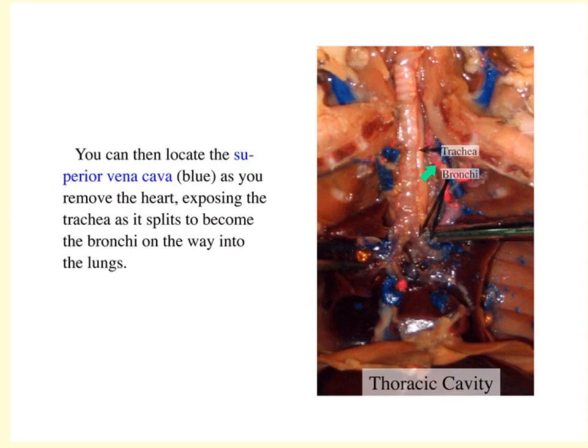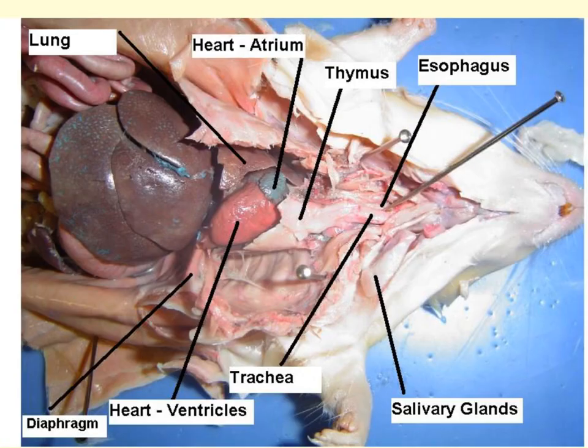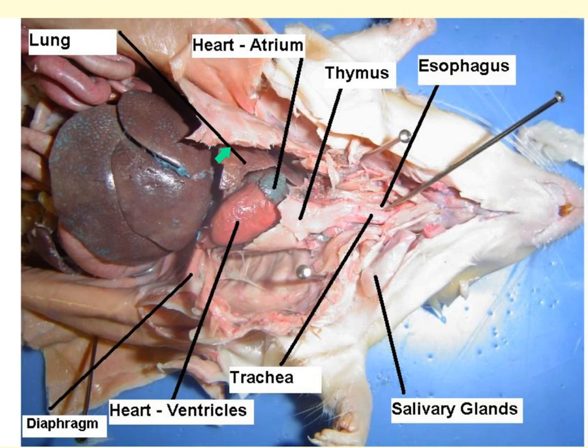The heart is four-chambered: the upper chambers are the atria and the lower chambers are the ventricles. We can see the diaphragm clearly. The trachea remains a trachea until it branches, at which point the branches become the primary bronchioles entering the lungs. The thymus sits on top of the heart, and we can see one of the lungs. Below the diaphragm we enter the abdominal cavity.